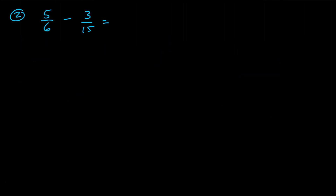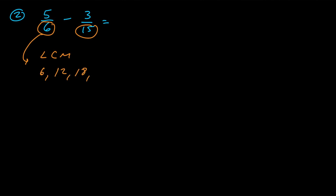For number two, we have five sixths minus three fifteenths. Same approach — look at the denominators and find the lowest common denominator, or least common multiple. If we take multiples of six: six, twelve, eighteen, and multiples of fifteen: fifteen, thirty, forty-five — we keep going until we find a common multiple.